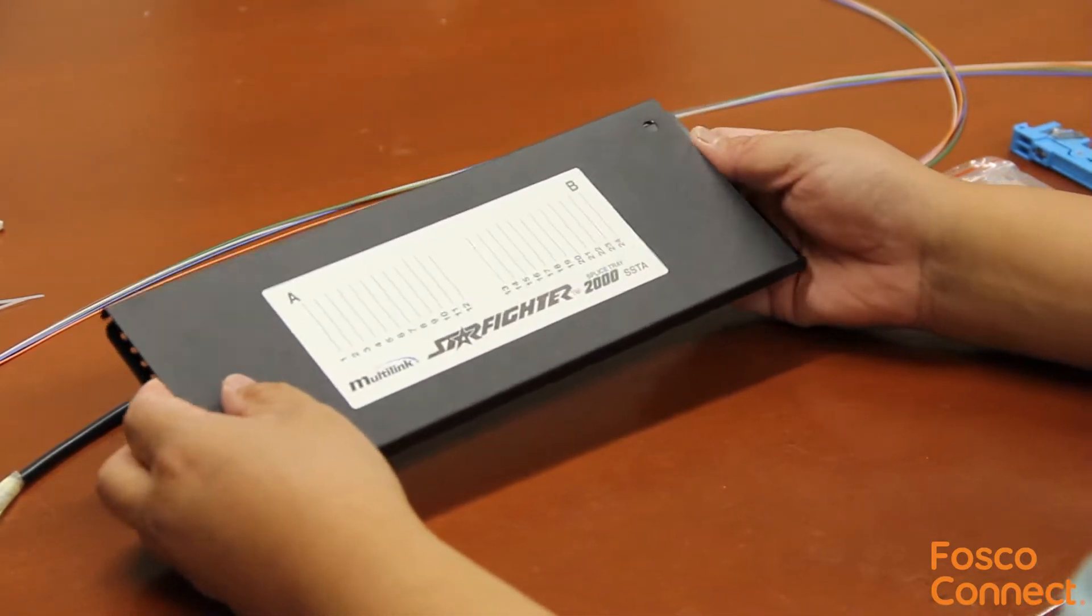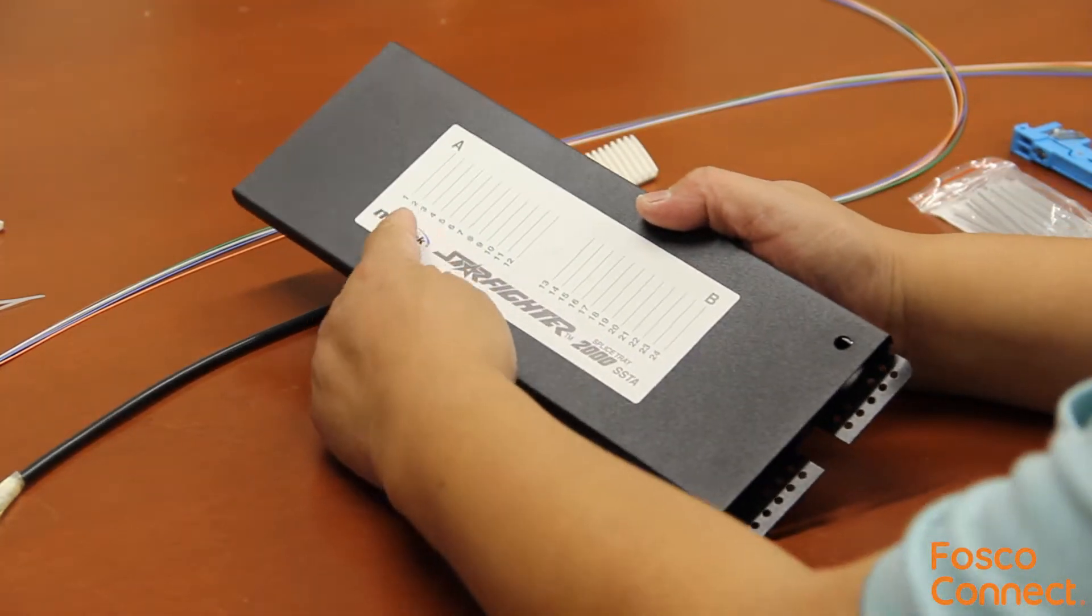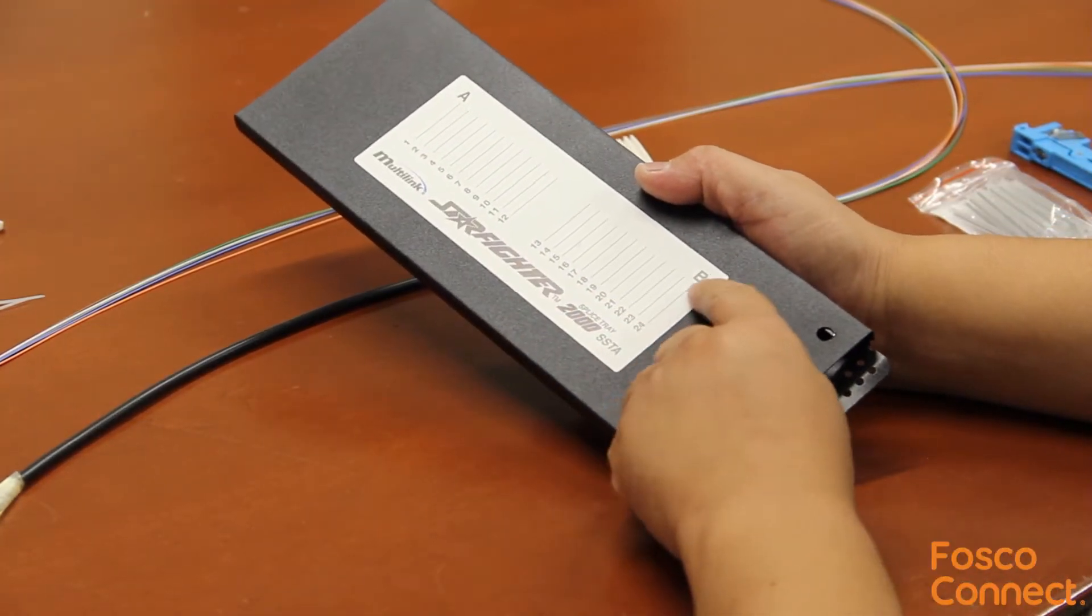This fiber splice tray is 11 3/4 inches long, 4 1/8 inches wide, and 7/16 inches high.